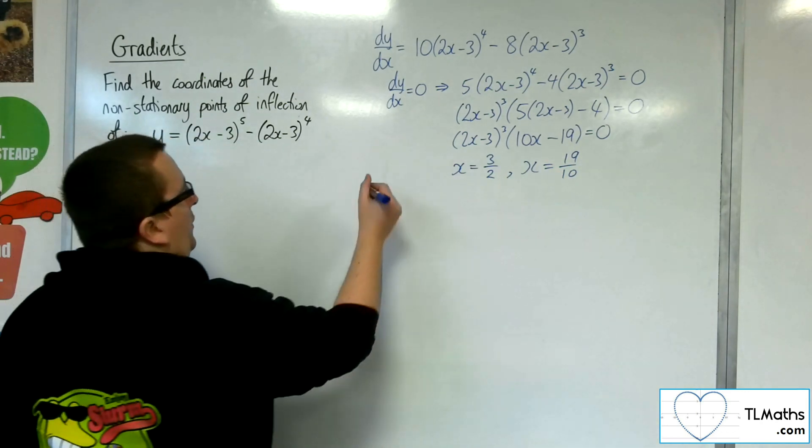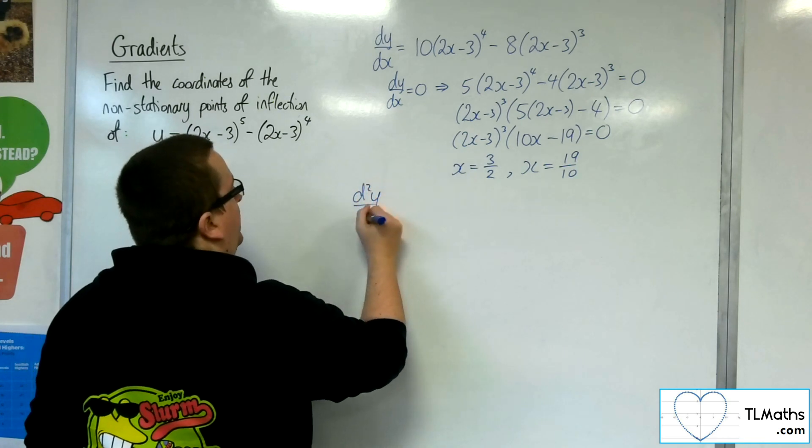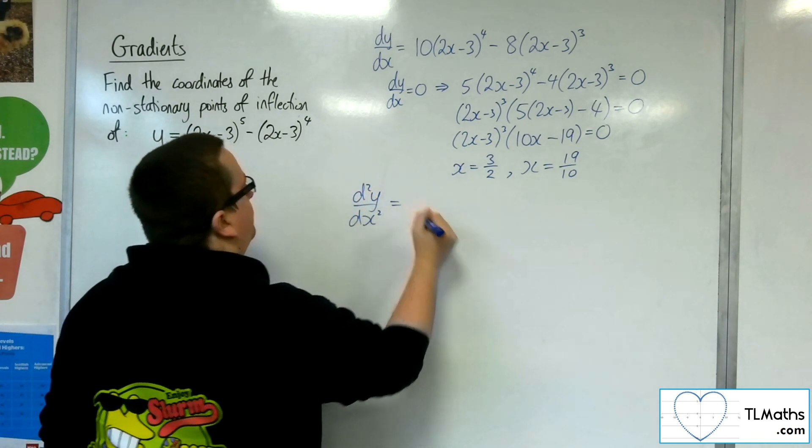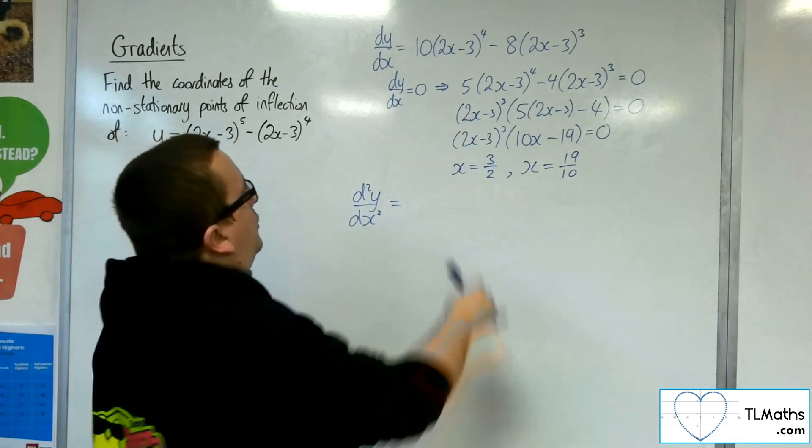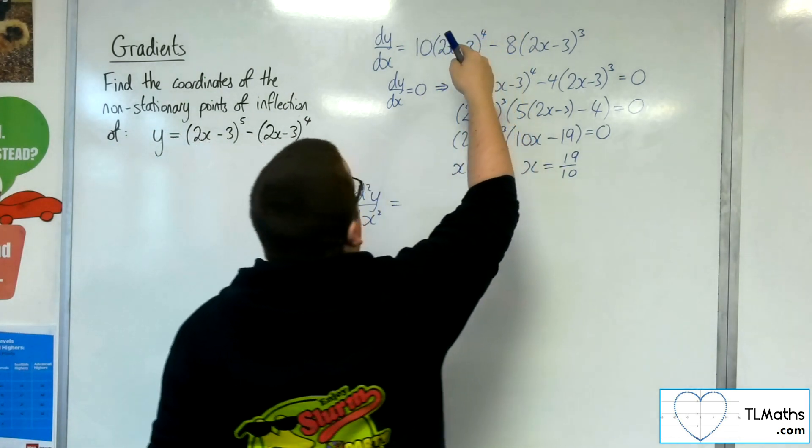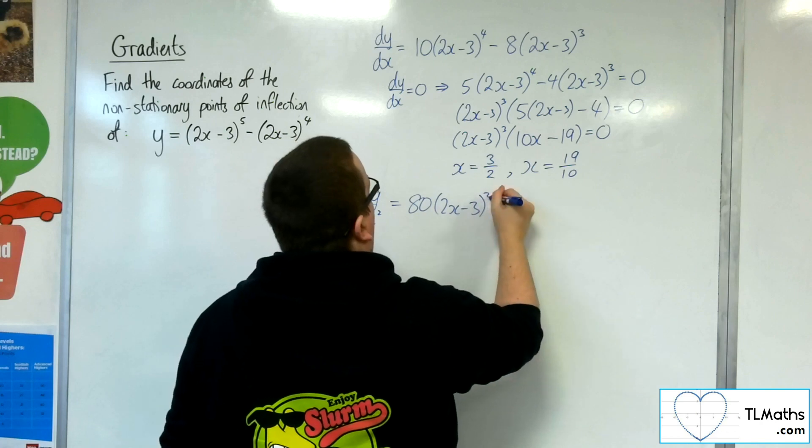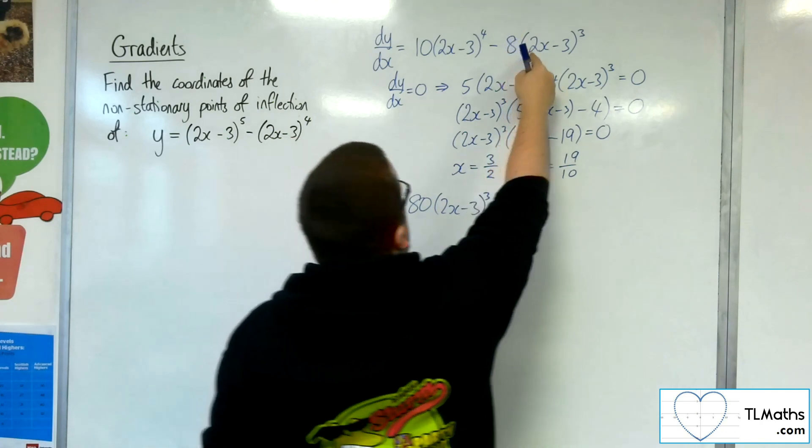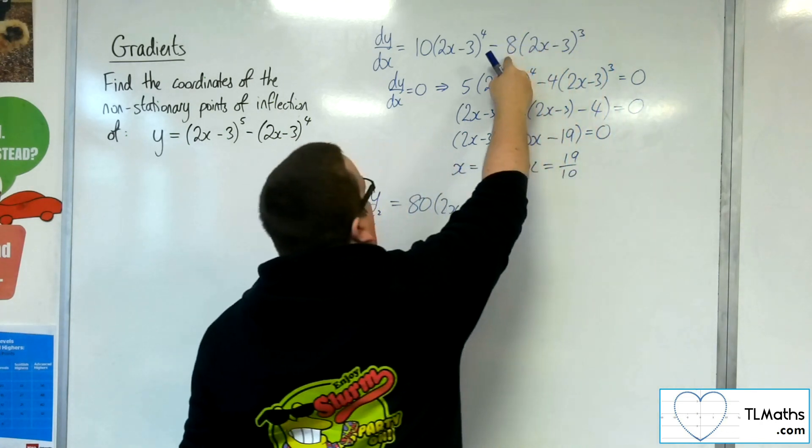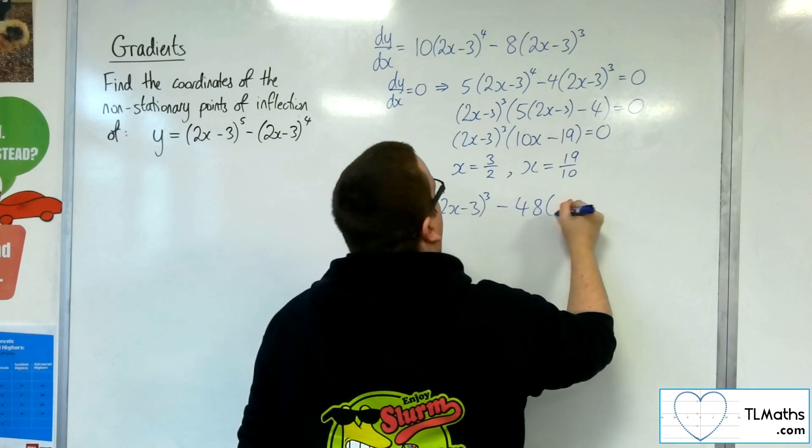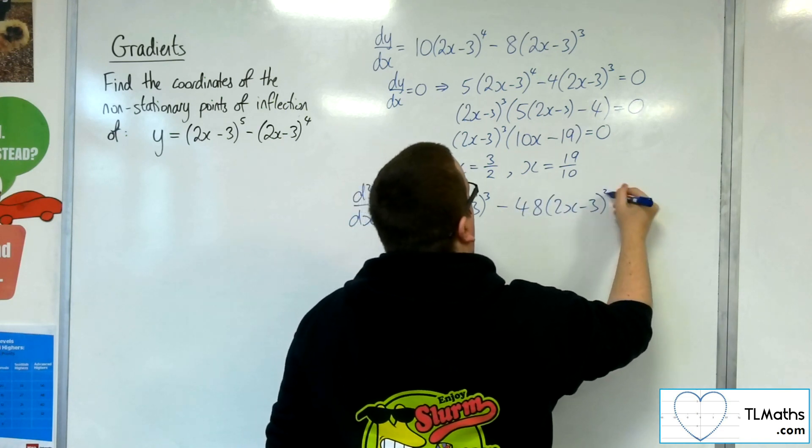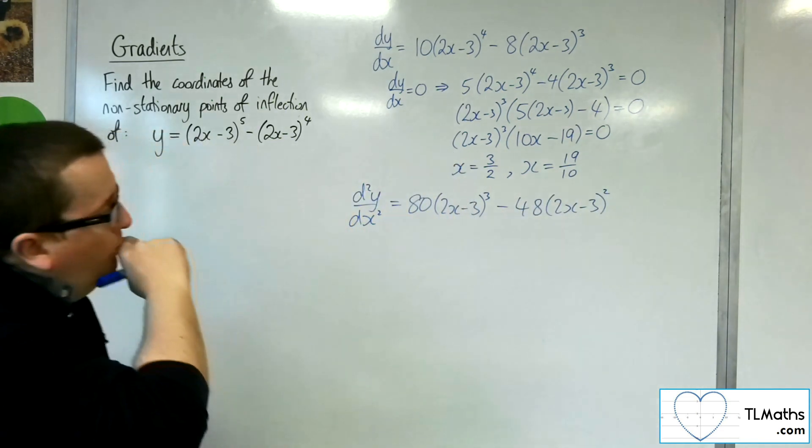So I now want to find the second derivative. I've got the 4 coming out and the 2, so that would be 80 2x minus 3 cubed. I've got the 2 and the 3 coming out, so 6 lots of 8, so minus 48 2x minus 3, and take one from the power.